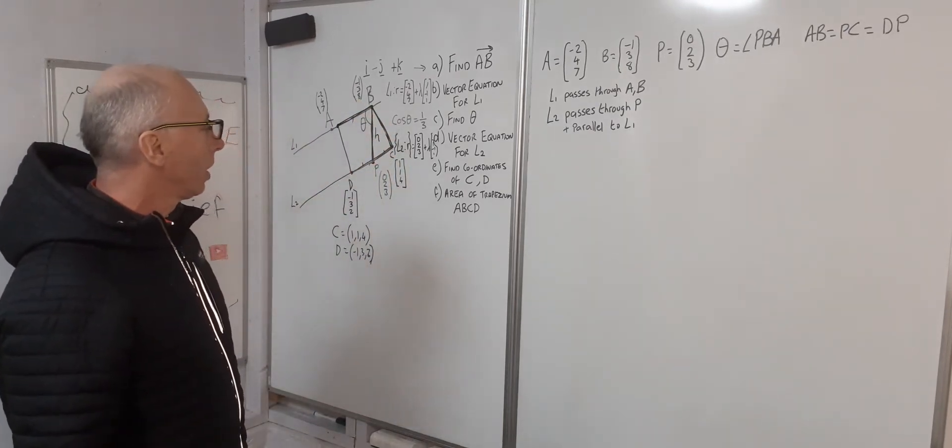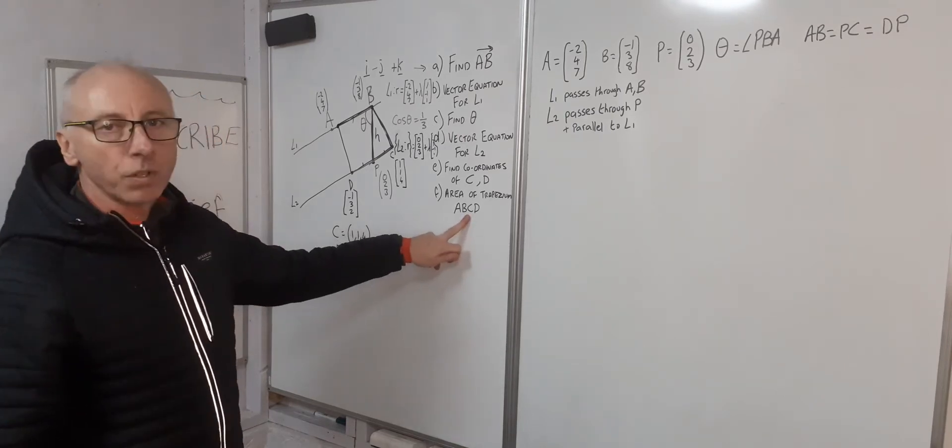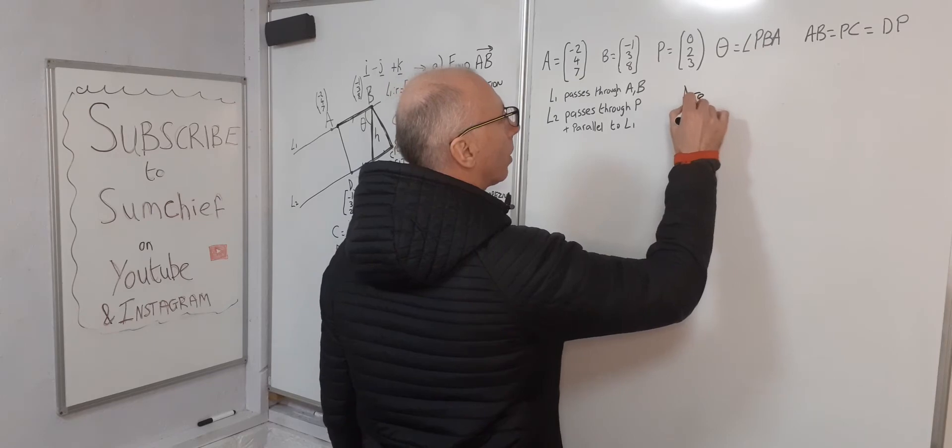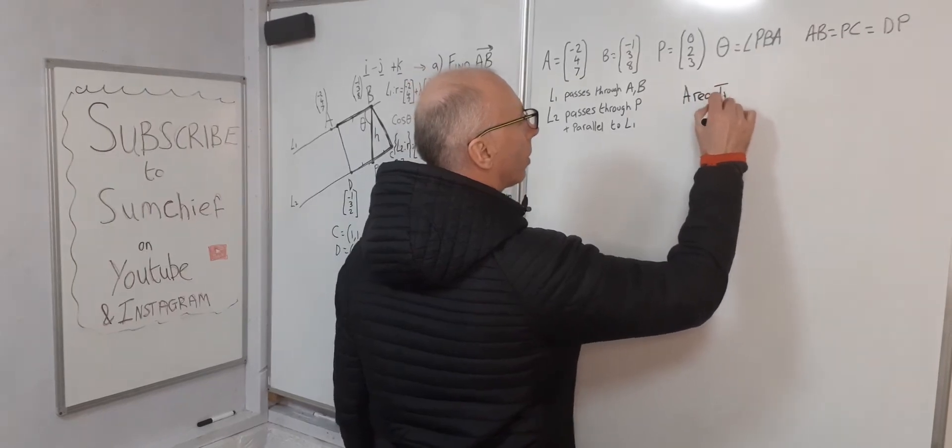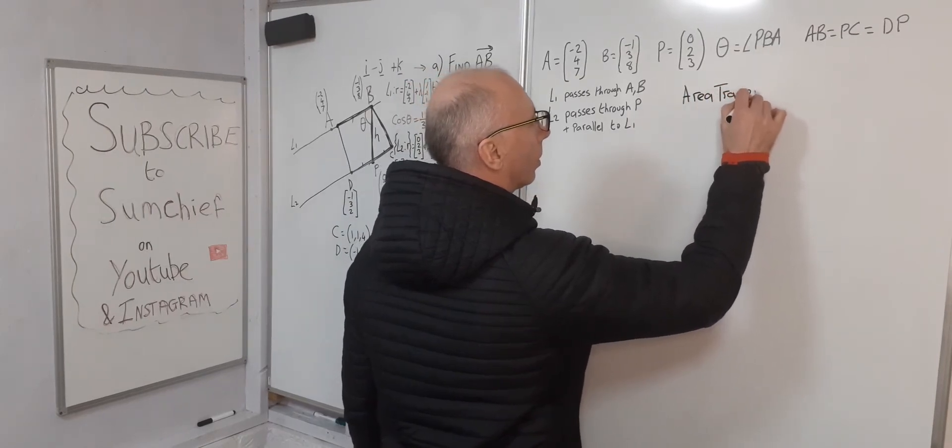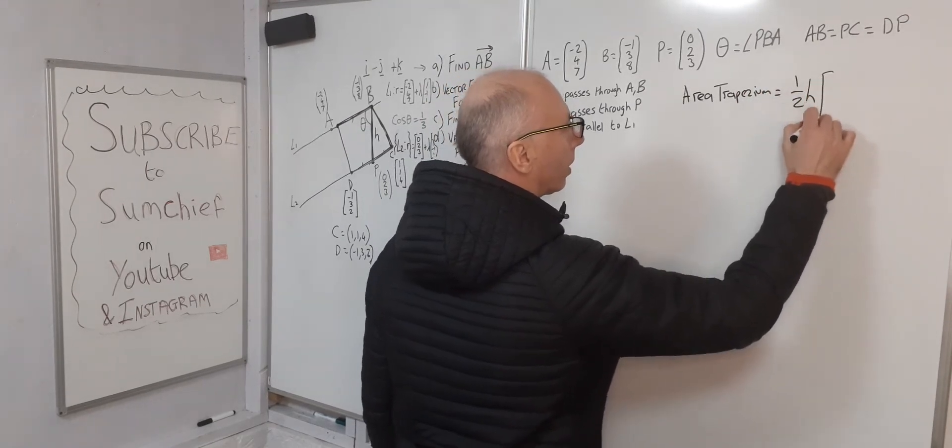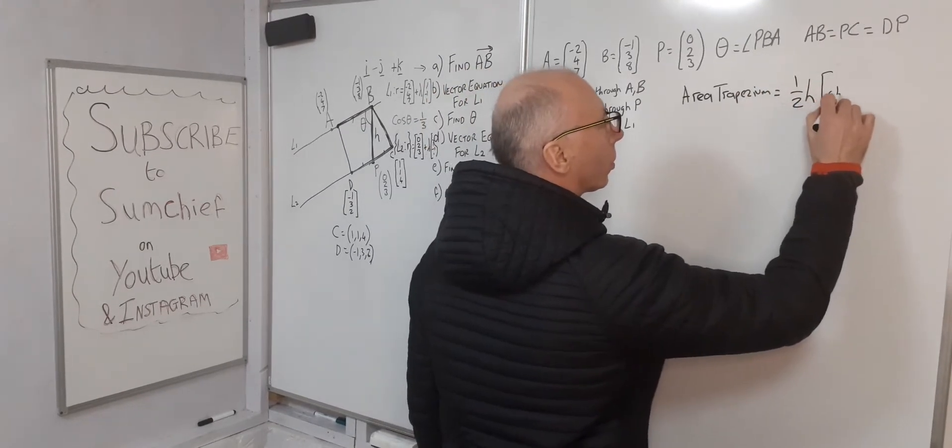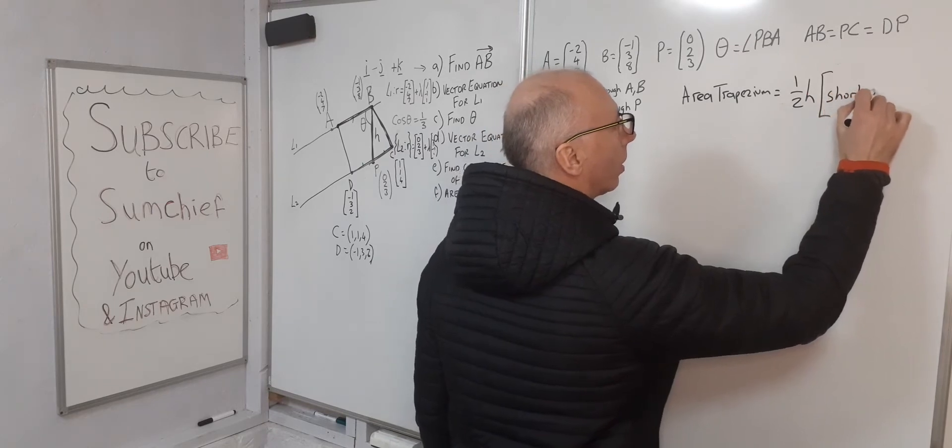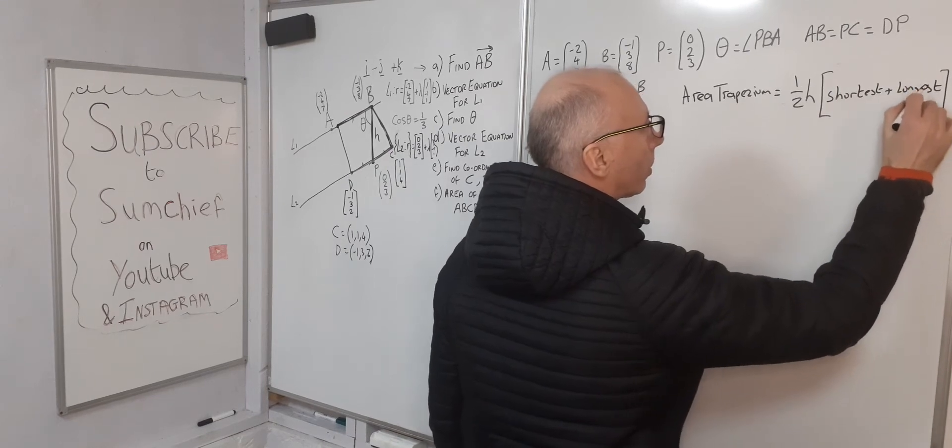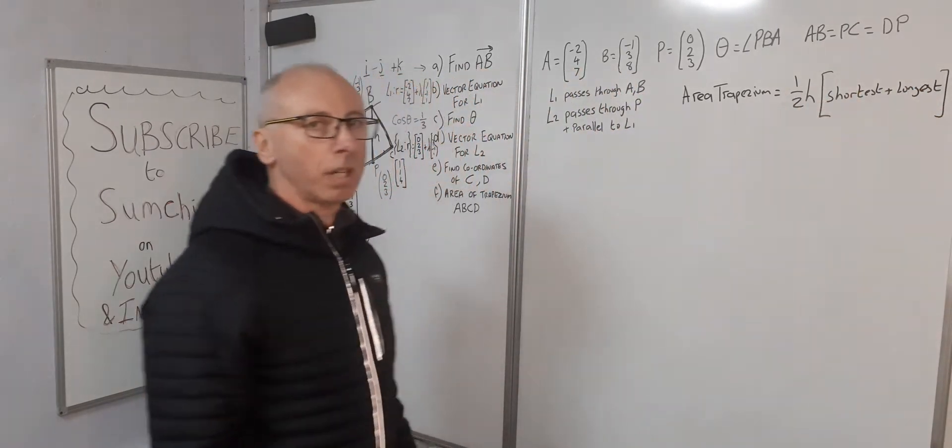ABCD, that's the trapezium we're looking for. So where do we start? Well, first of all, the formula for area of the trapezium: that is half times the height times shortest plus longest.